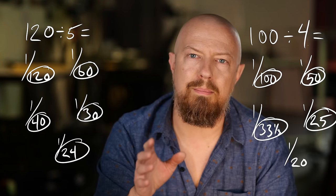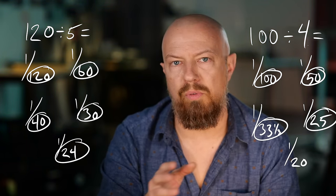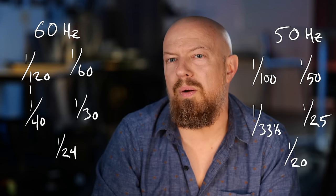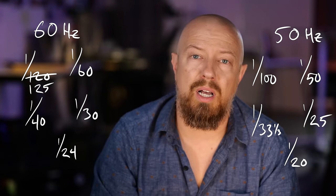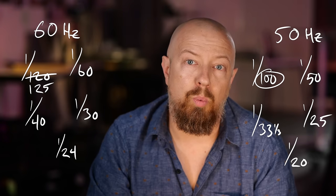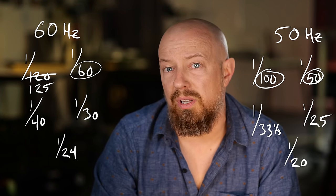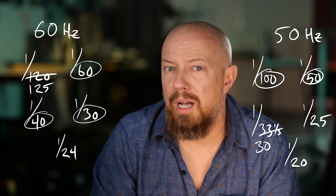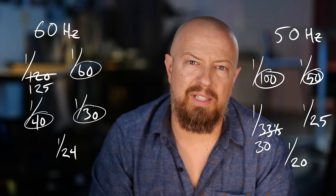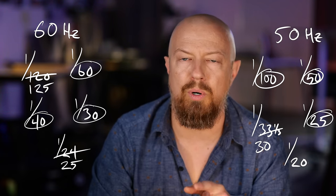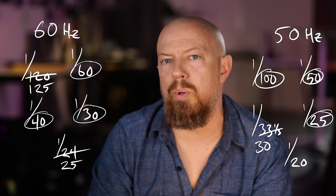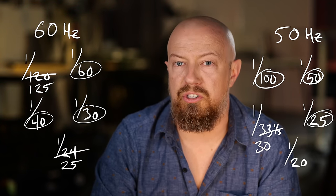The problem is that most cameras don't accommodate all of those shutter speeds. Most cameras give 1/125th of a second, not 1/20th. You'll probably find 1/100th, 1/60th, 1/50th, 1/40th, and 1/30th, but not 1/33⅓rd, and you'd have to choose 1/25th instead of 1/24th. If your camera is capable of working in shutter angles though — like the GH5 and GH5S — you can be more accurate by selecting shutter angle instead of shutter speed. But for most users, relying on shutter speed is perfectly fine.